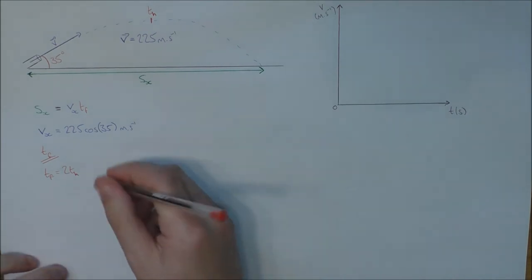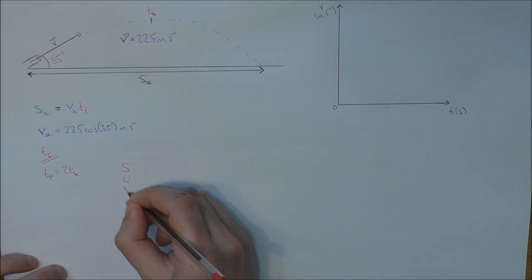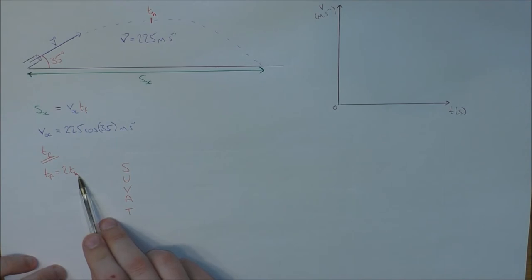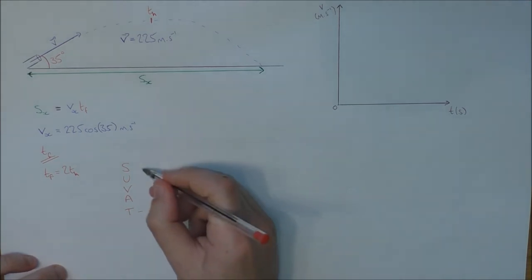But I can start to write down some SUVAT equations. So I can say that S, U, V, A, and T. Now I want to find T_H, so I want that one. Now I don't know how high it's going to go.